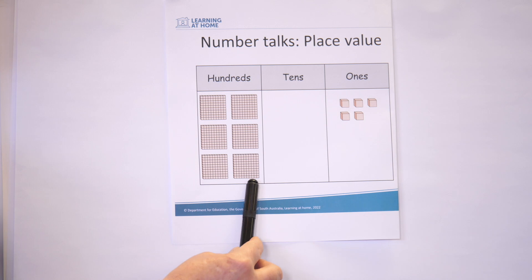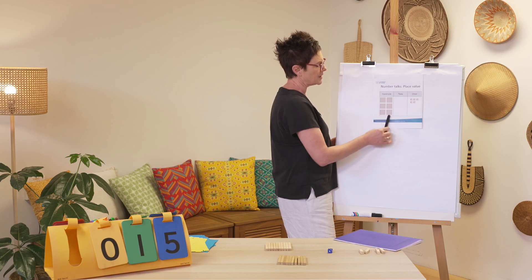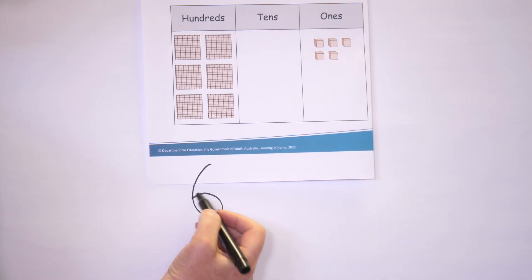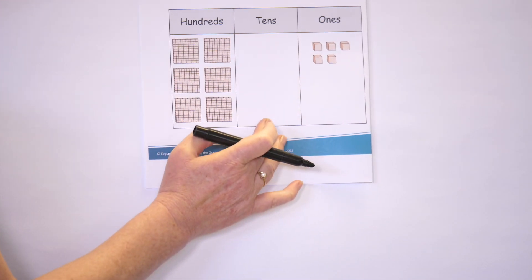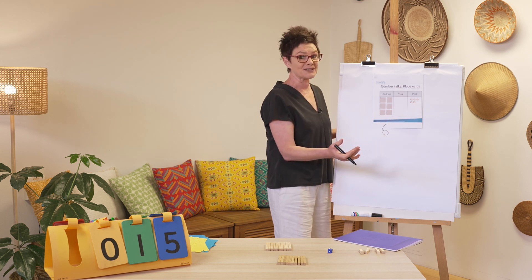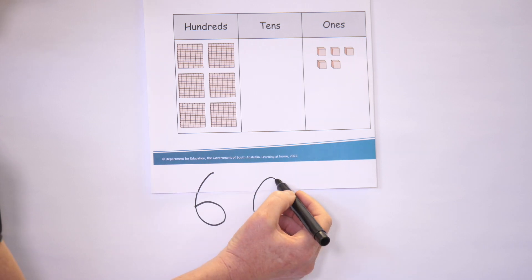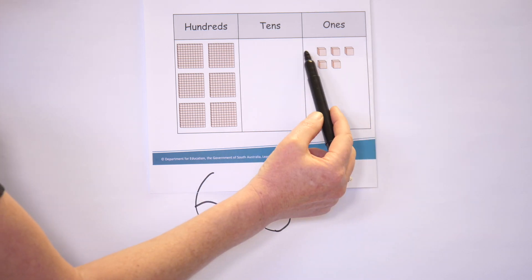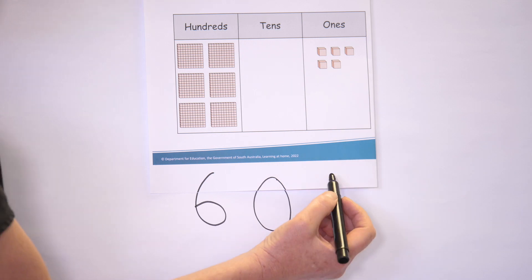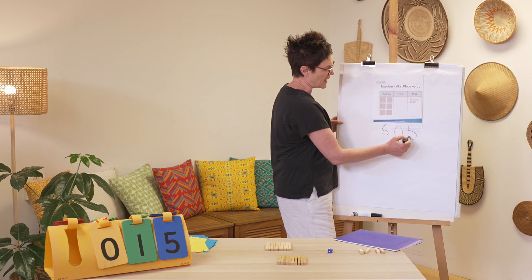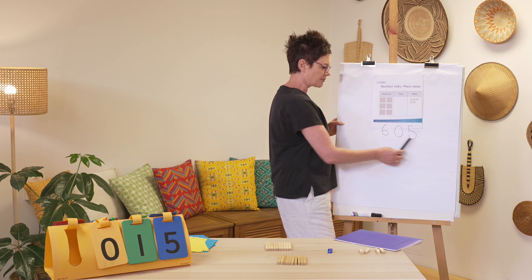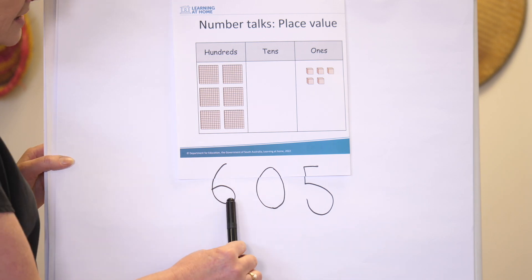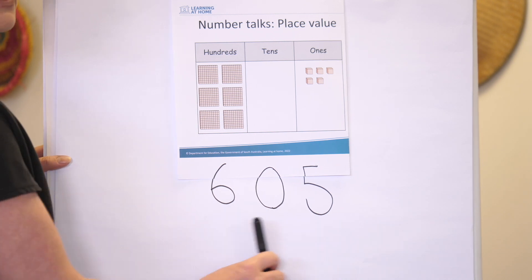Let's get to our warm-up number talks. First, let's look at our hundreds — we have six. How many do we have in our tens? We have none of these, so there's a zero. And in our ones, I can see a three and a two, or a five collectively — we have five ones. So let's say this number: six hundred and five.